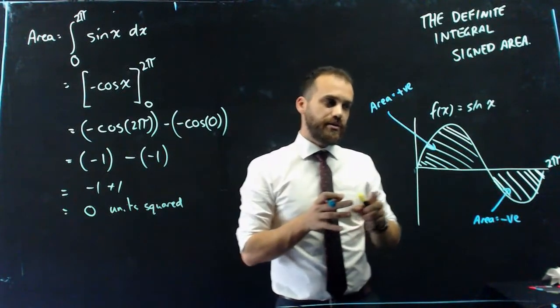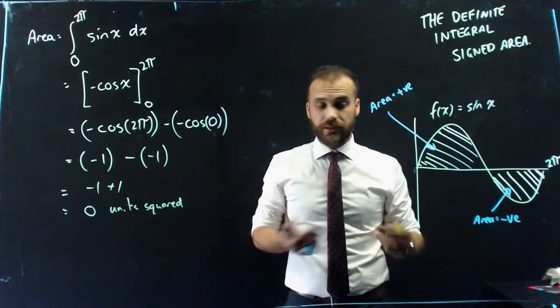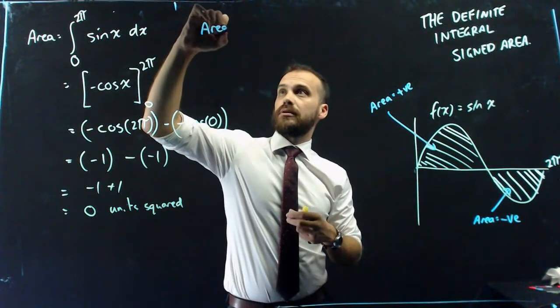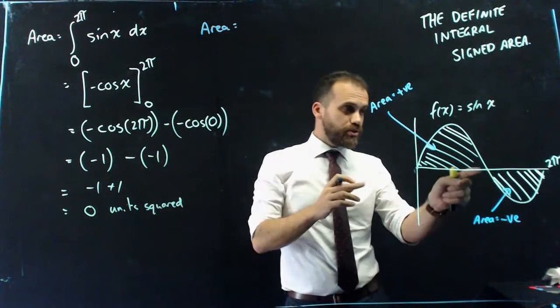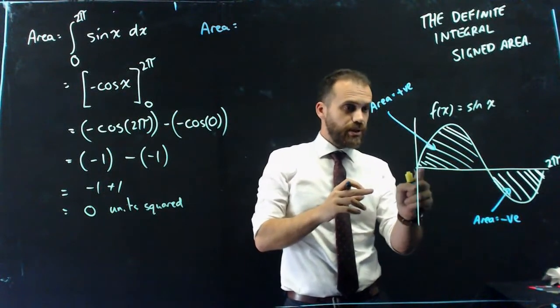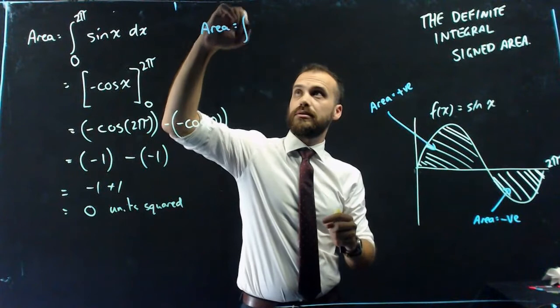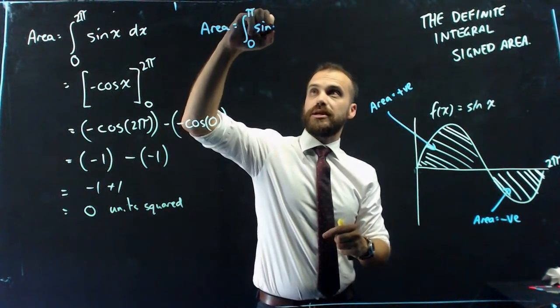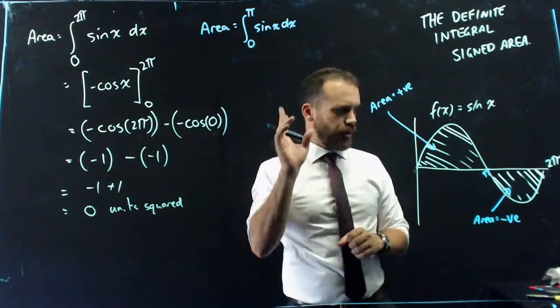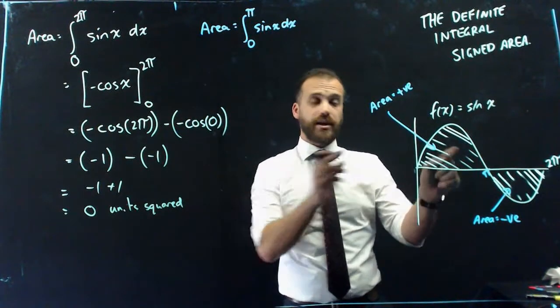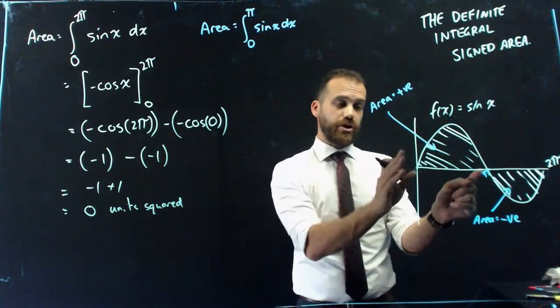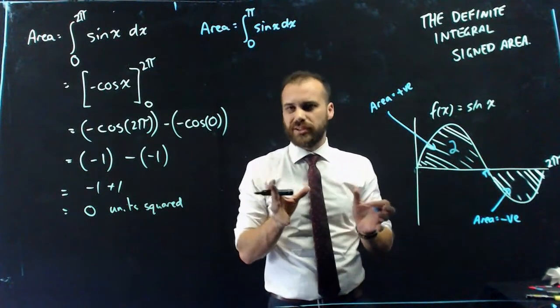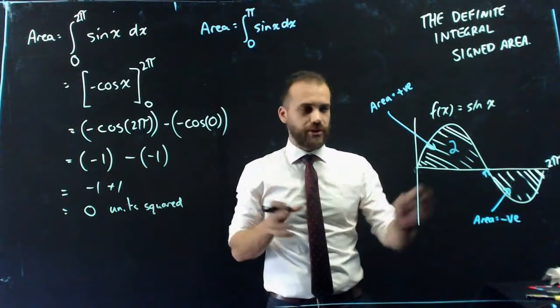So if I had done, and this is what I should have done, if I wanted to find that actual area, I should have done the integral between this point and this point, pi and 0 of sin x with respect to x. Now if I'd done that, I would have got that area here, just the top part, and that would have been an answer of 2. I'll just tell you that. You can do the calculation, but I'm telling you, it would have been 2.